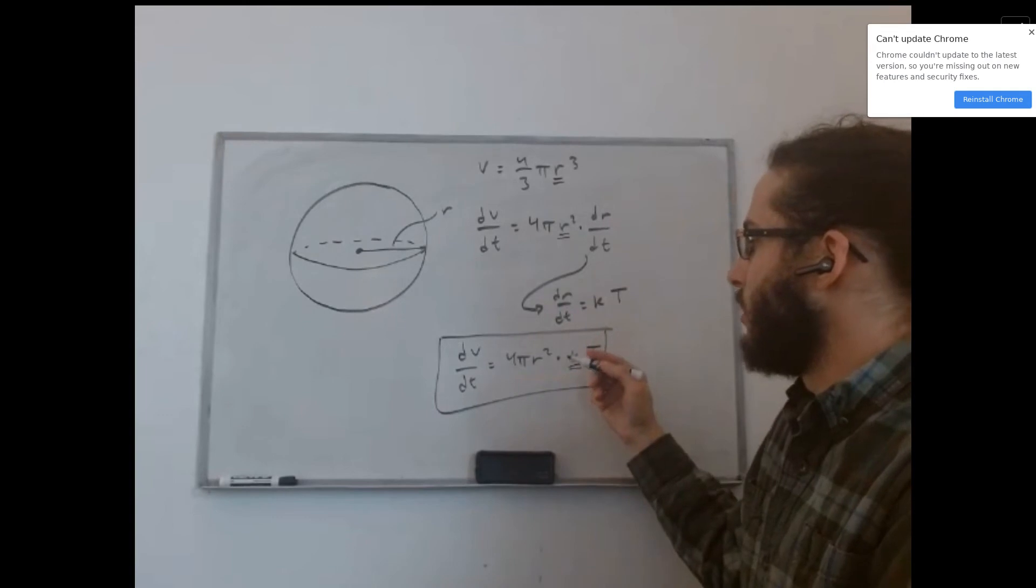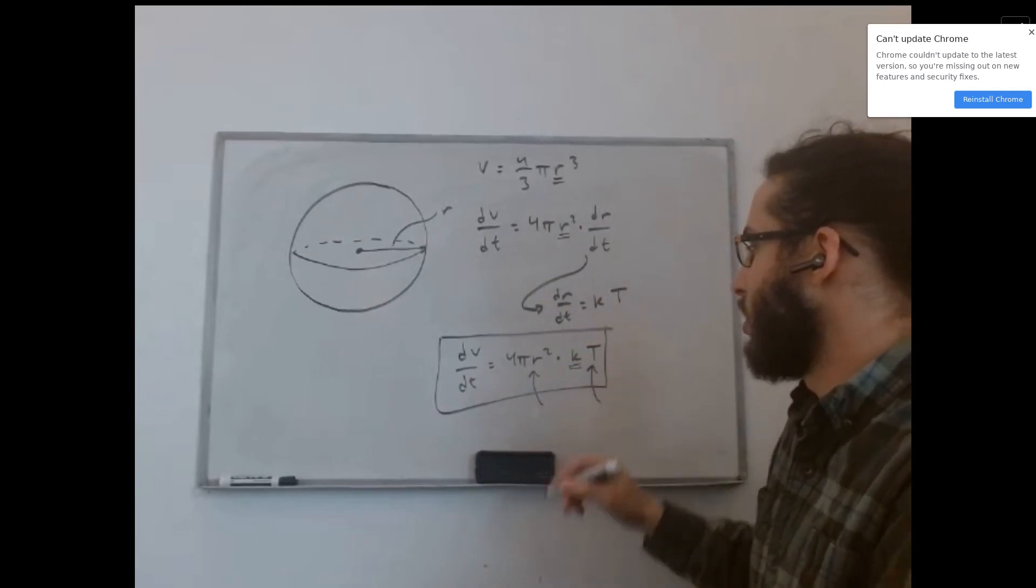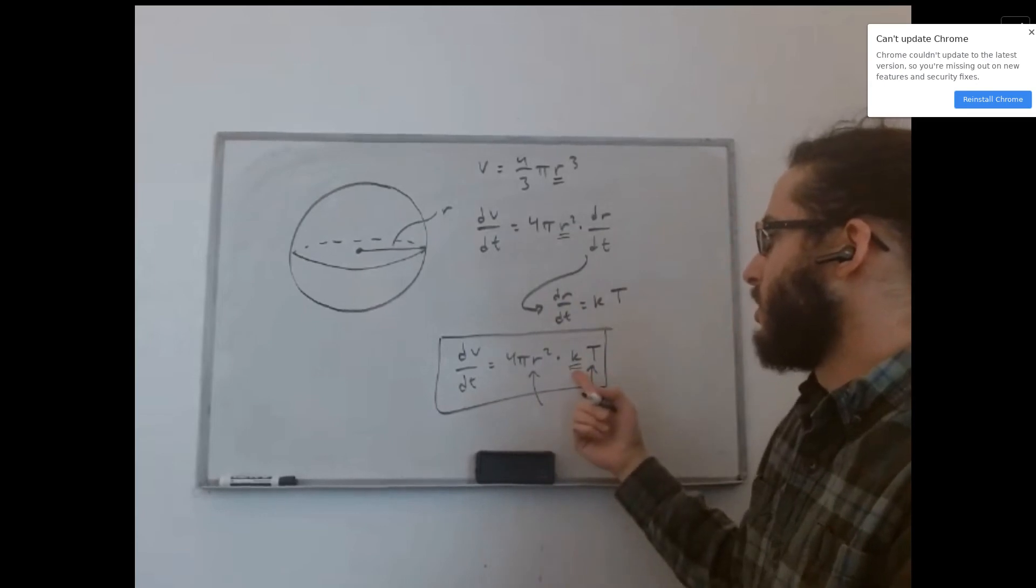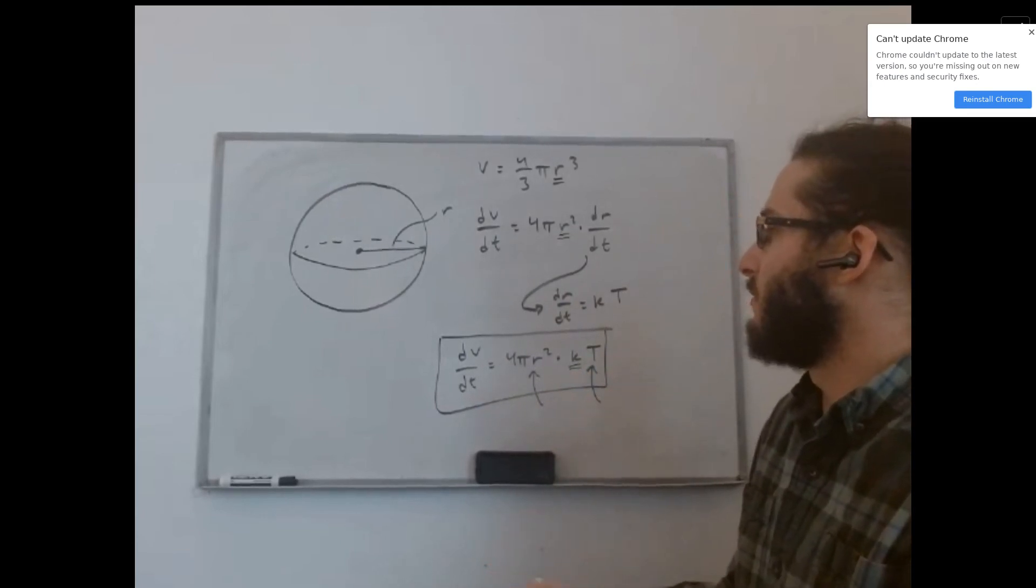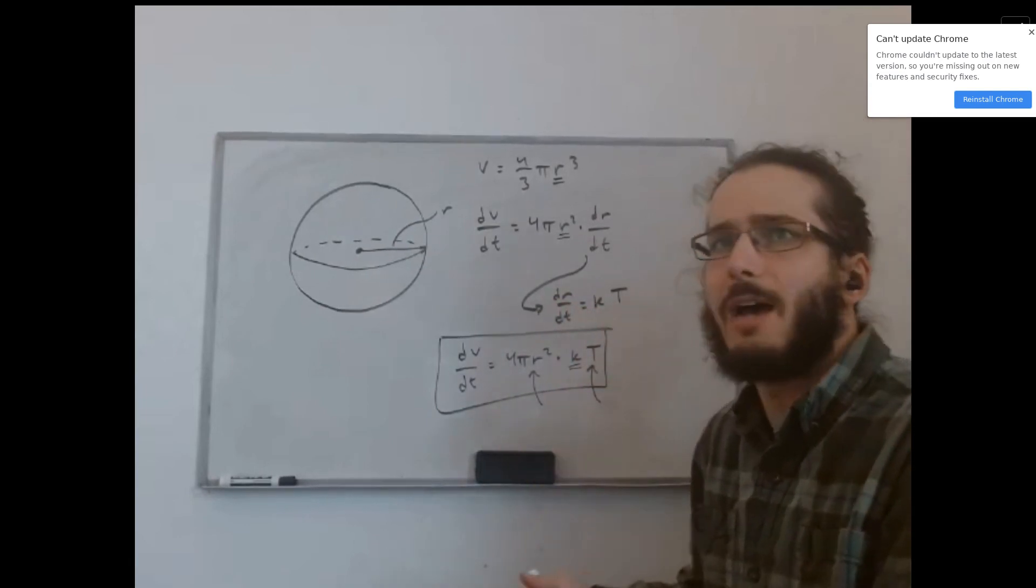And we can see that this is a function of both the radius and the temperature of the glass, and it incorporates this constant that we would need to quantify the relationship between the radius and the temperature of the glass.